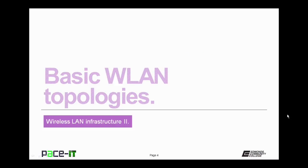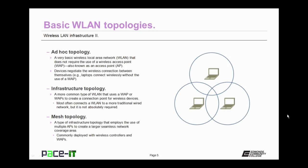The first topology is the ad hoc topology. It's a very basic wireless local area network that does not require the use of a wireless access point, which can also be called a WAP or an access point. The devices negotiate the wireless connection between themselves. An example of this is when laptops connect wirelessly without the use of a wireless access point.